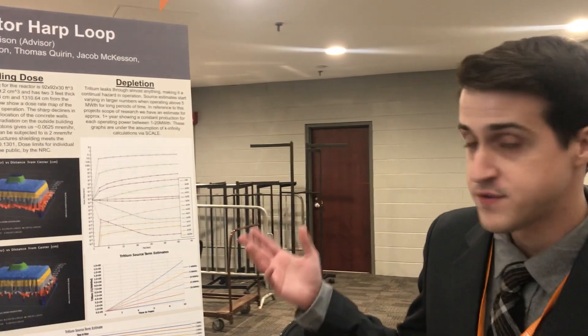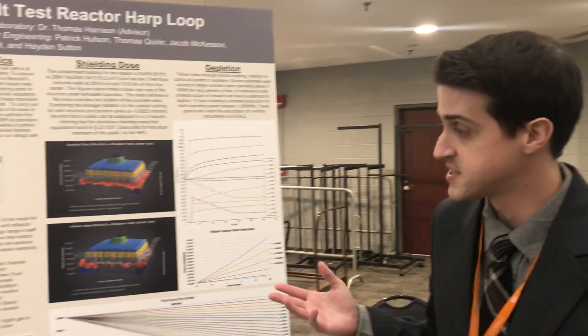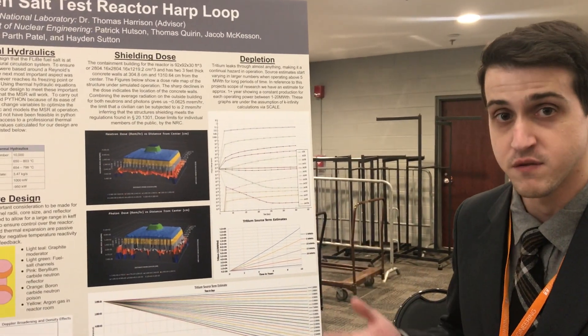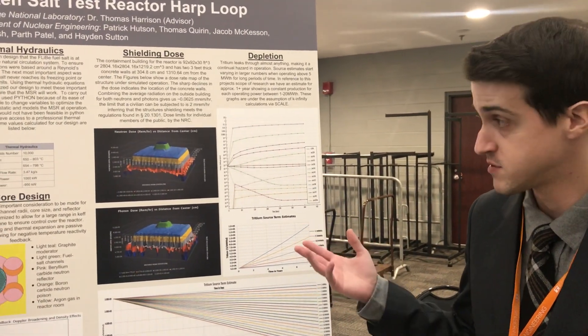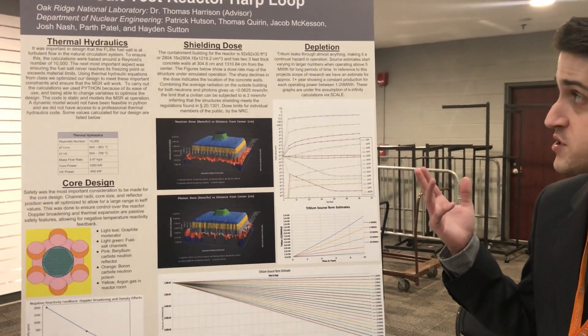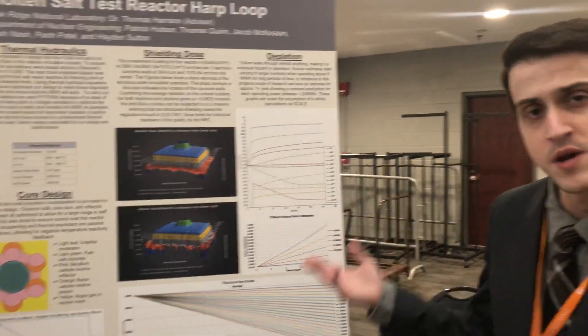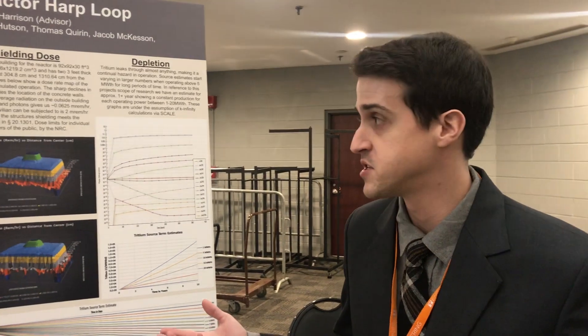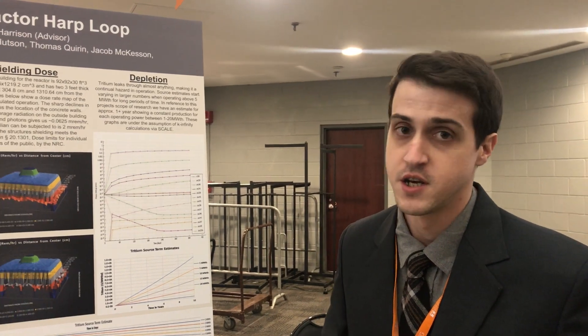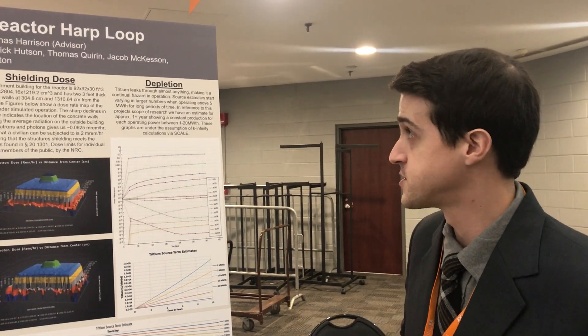We hope to actually complete this design and submit it to DOE for construction at Oak Ridge. We're targeting about 1 megawatt for test purposes, and we could go up to 20 megawatts. We're trying to keep it under 20 megawatts to keep it as a CAT2 facility according to DOE standards.